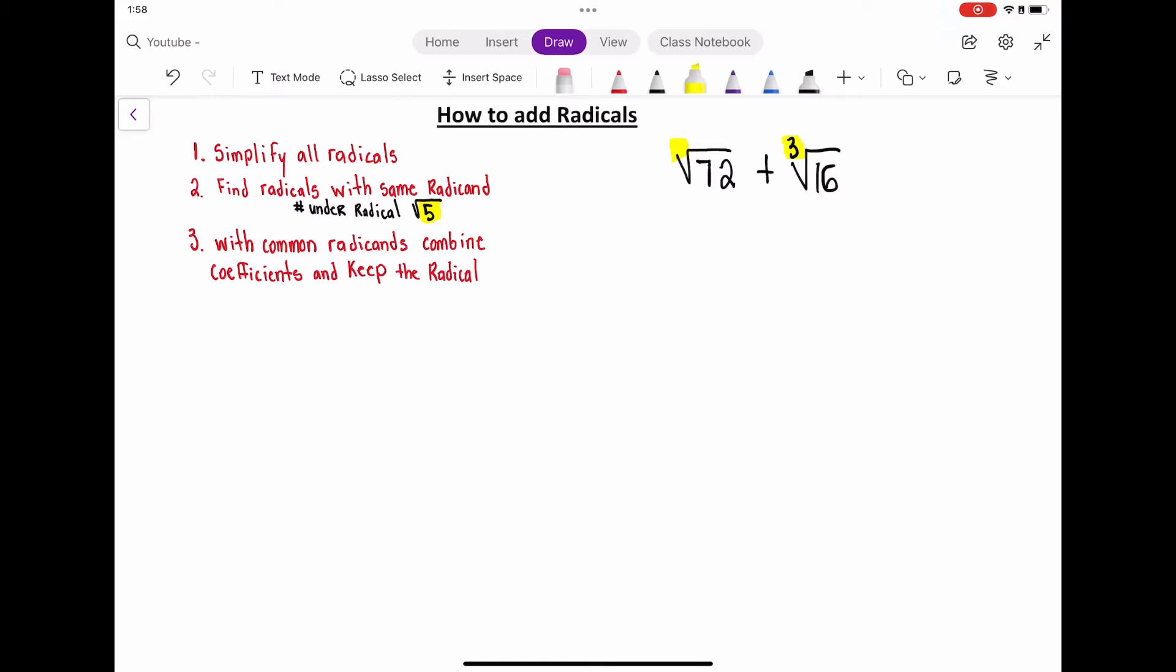When you don't see a number in the index like with radical 72, we should know and understand that the index is two, square root, so the index is two. So we can't add these.